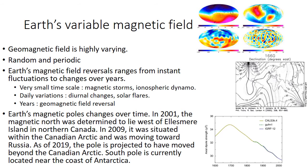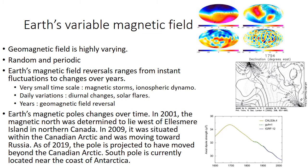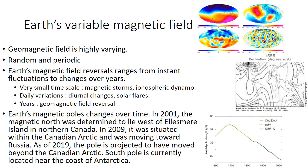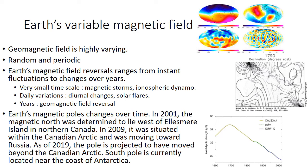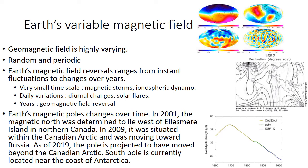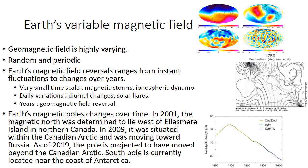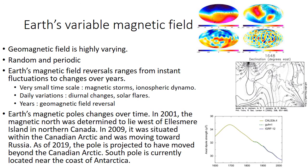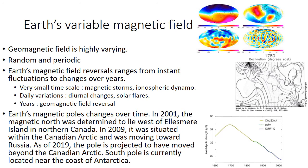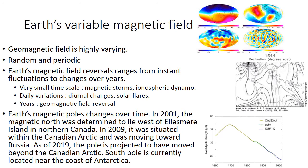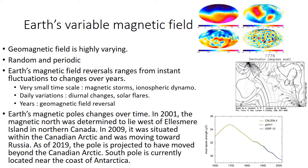Now let us look into how the magnetic field of the earth changes. The geomagnetic field is highly varying. It is being interacted by the solar activity and every activity occupying the interplanetary space, as well as activities happening inside the deep core of the earth. Therefore, the magnetic field is not constant — it is highly varying. Its variation can be random, such as the variation happening during a solar storm or a flare, or it can be periodic, such as a magnetic pole shift. The magnetic field changes happen from instant fluctuations to changes over years.